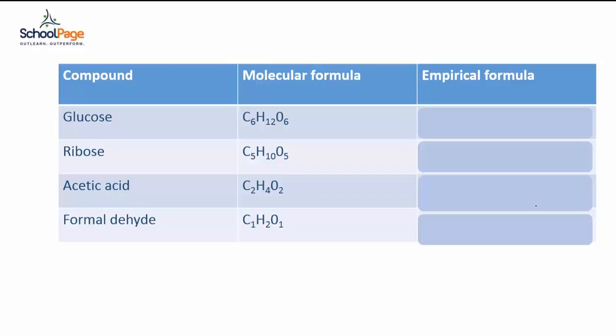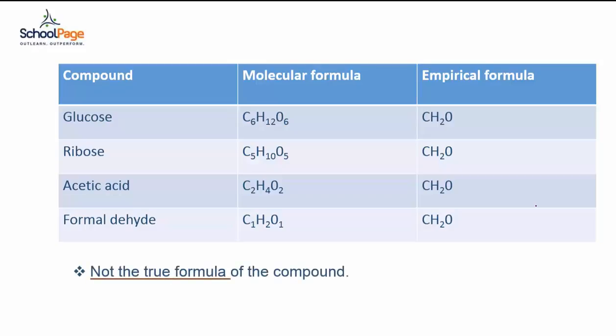Now, observe the empirical formula of these compounds. Glucose, ribose, acetic acid and formaldehyde all have the same empirical formula CH2O. This is one more reason for not considering empirical formula as a true formula of a compound.